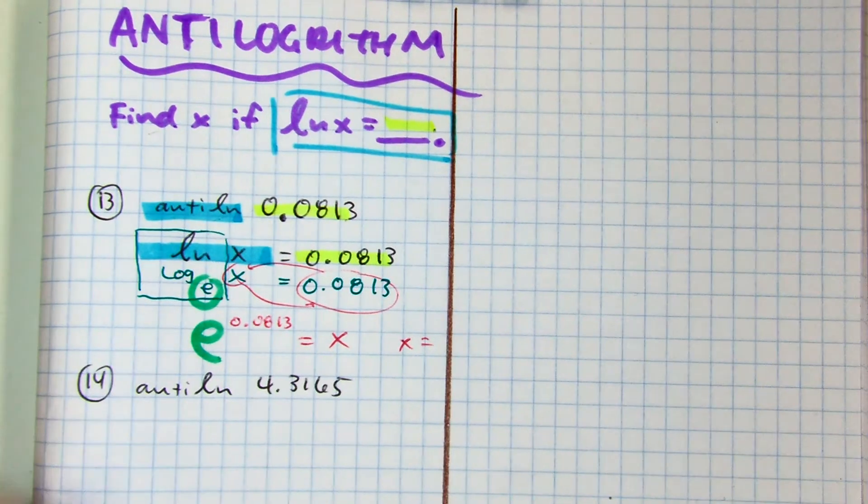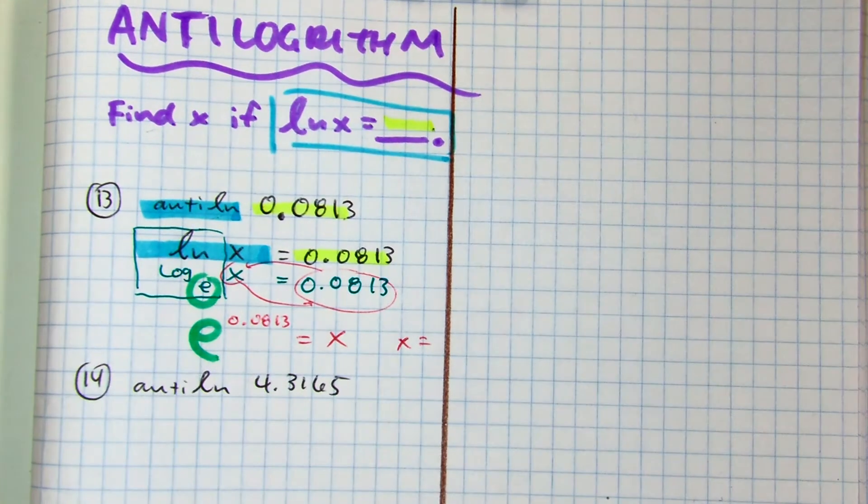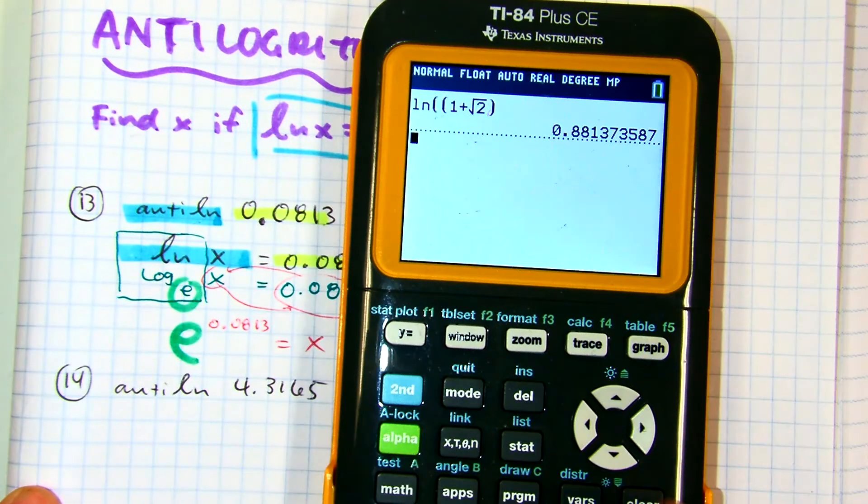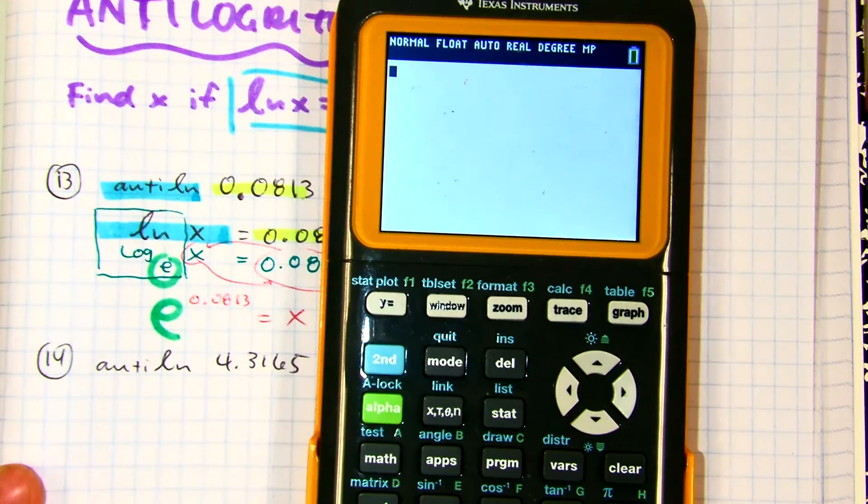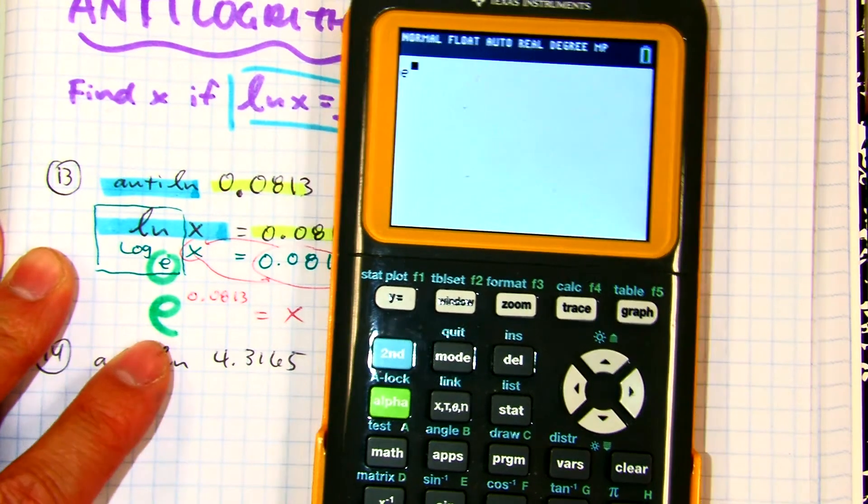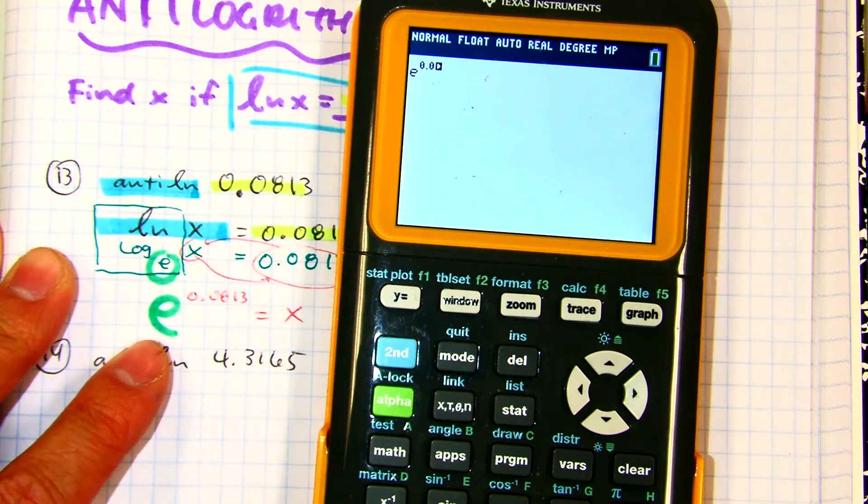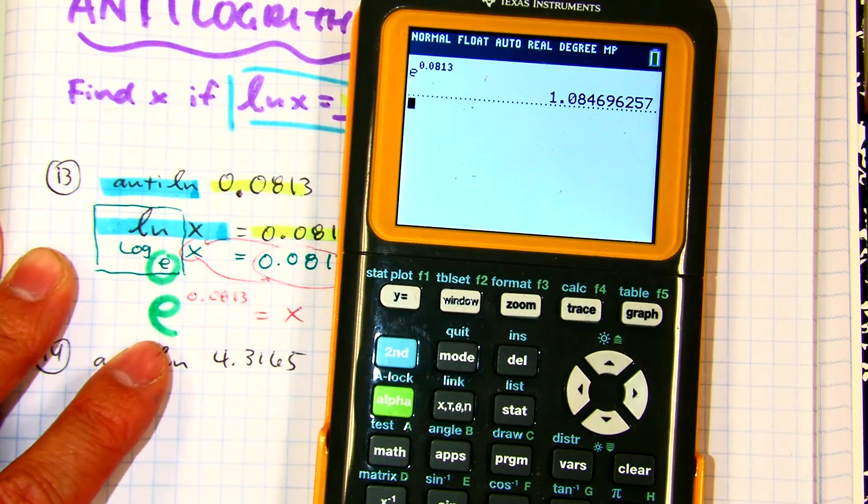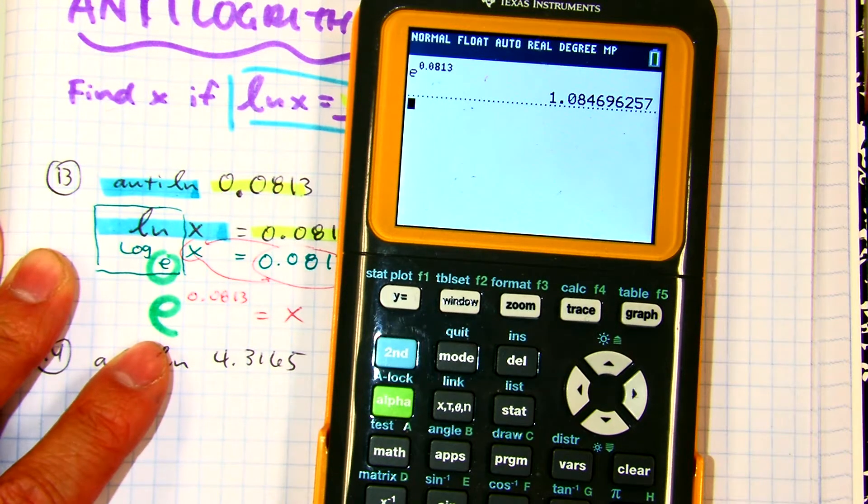Now we can punch that into your calculator. So I'm going to have 2nd natural log, 0.0813, and I press enter, and I get 1.0847.